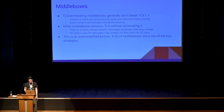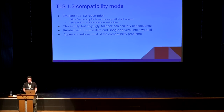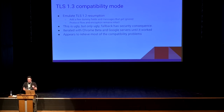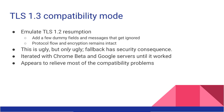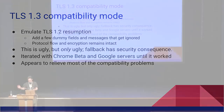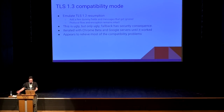We need a workaround of some kind, either a fallback or whatever, but we don't want a fallback. Enter TLS 1.3 compatibility mode. This is ugly beyond belief, but it does work. We made TLS 1.3 look like TLS 1.2 resumption, which only takes injecting a few dummy fields and some messages that the other side ignores, but for whatever reason the middle boxes think are critically important. The actual protocol flow and encryption remains intact. This is ugly, but it's only ugly. The fallback has a security consequence, and this one just costs aesthetics and complexity. I would rather not pay that, but if I have to pick one, I'll pay that one.